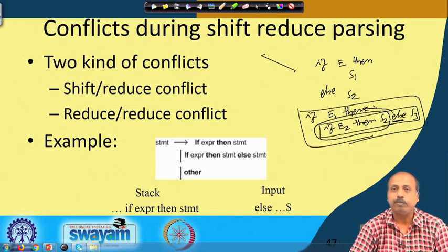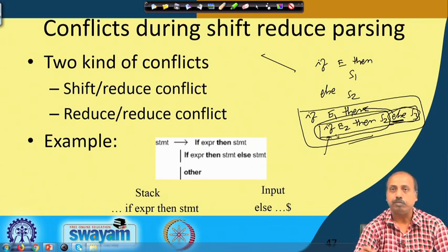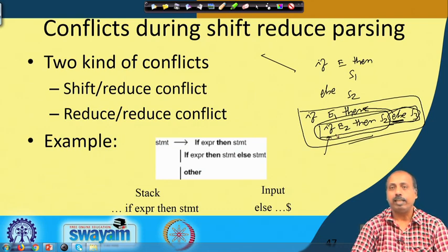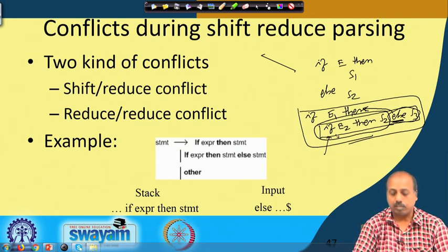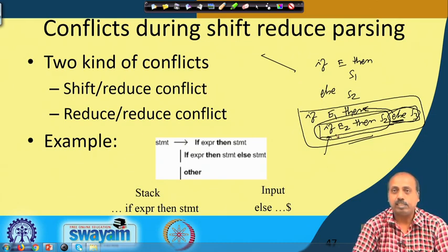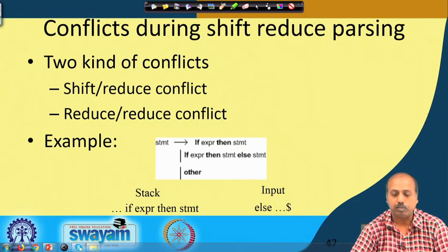The parser will not be able to take a unique decision whether to do a shift or a reduce. The default action is to do shift. If you shift, this else S3 becomes a part of the innermost if. Most programming languages also specify that the else is always associated with the innermost if, so in that case shift is a valid action. That is one example of shift-reduce conflict.